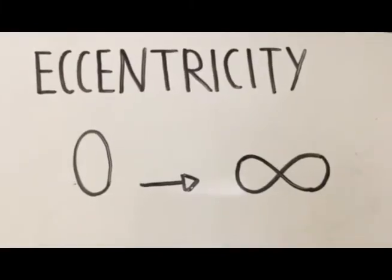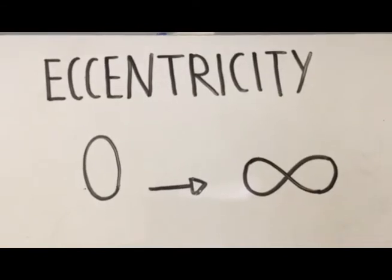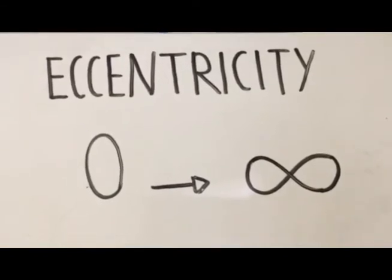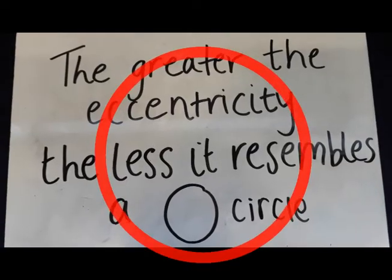To prove this, scientists look at eccentricity. Eccentricity is a value that ranges from zero to infinity. It determines the amount by which the orbit of a planet around the Sun deviates from a perfect circle.